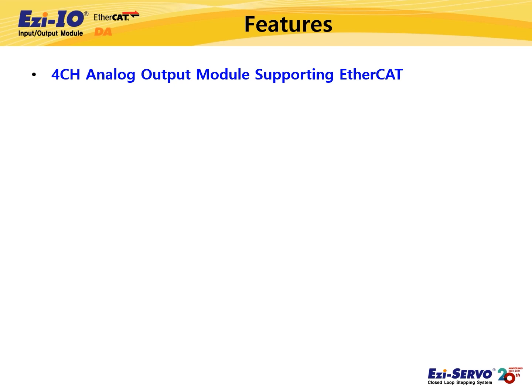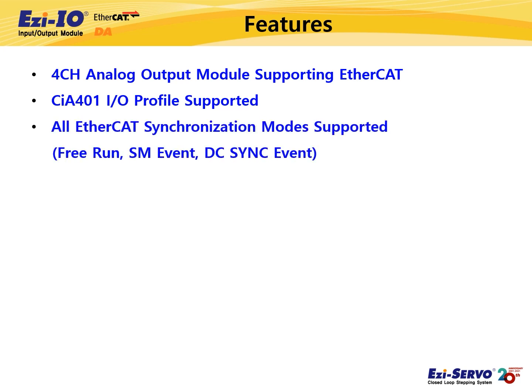I will introduce the features of Easy IO EtherCAT-DA. Easy IO EtherCAT-DA is a four-channel analog output module using the EtherCAT network, and it has the same communication features as Easy IO EtherCAT-AD.